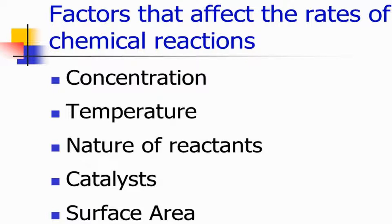As you can see, the factors are: concentration of the reactants, temperature of the reaction, nature of the reactant, catalyst, and surface area or the size of the particles of the reactant. These are certain factors that affect the rate of a chemical reaction.